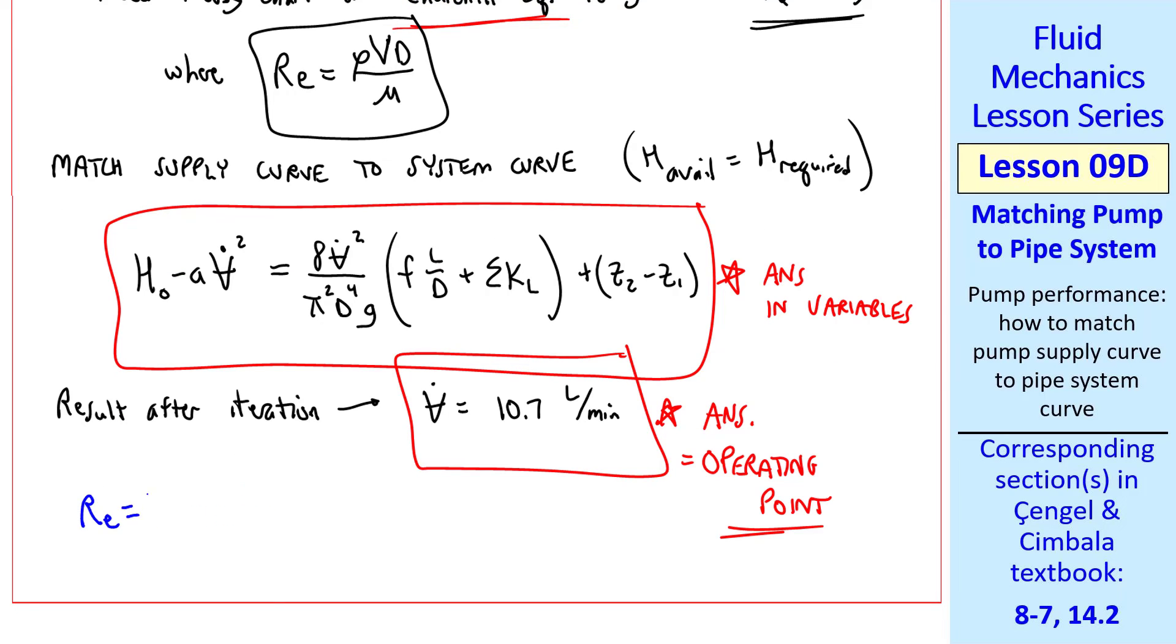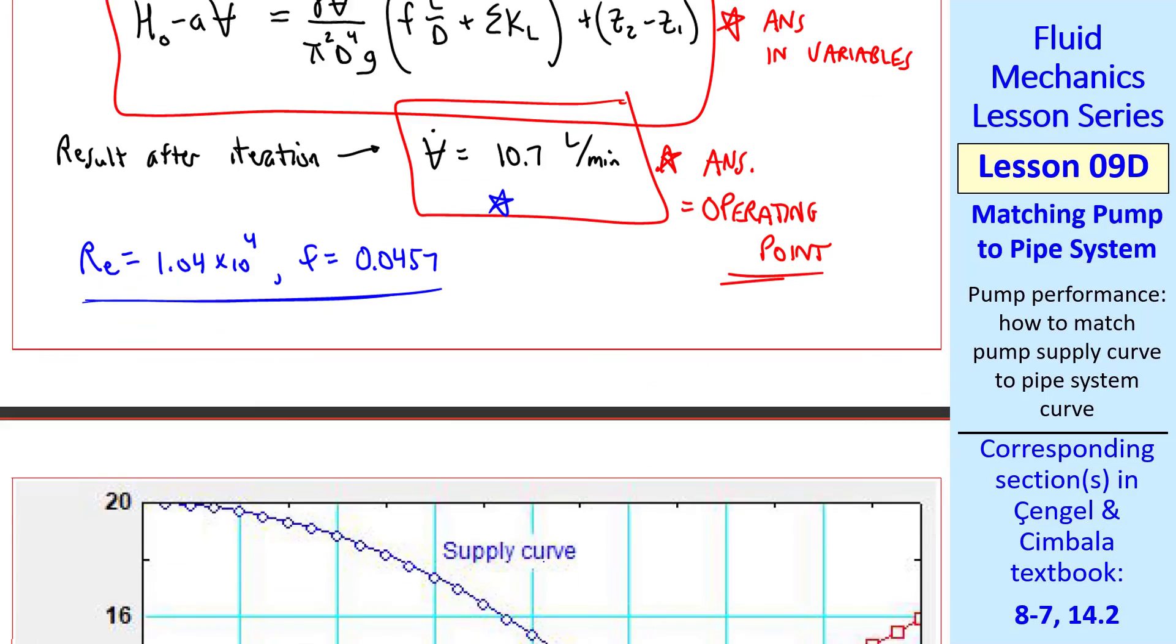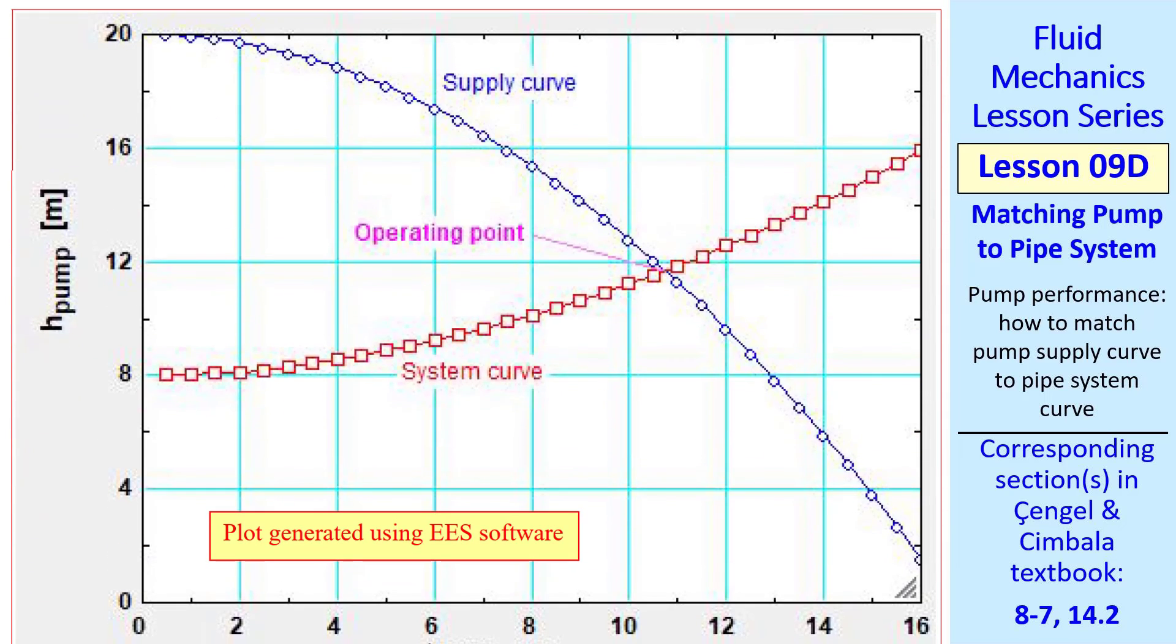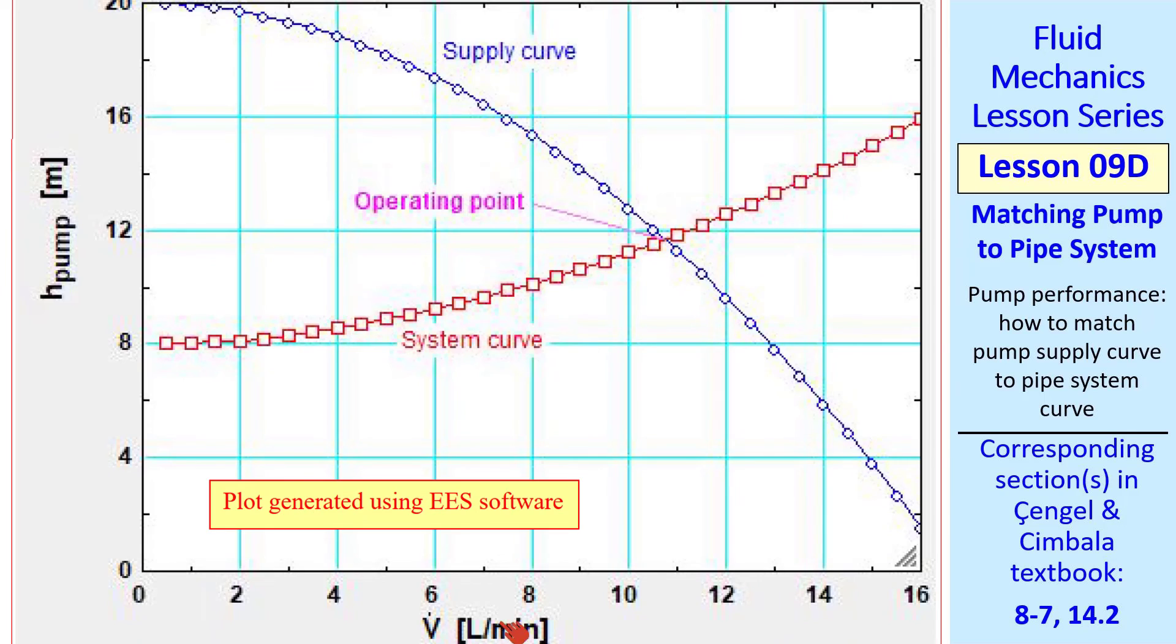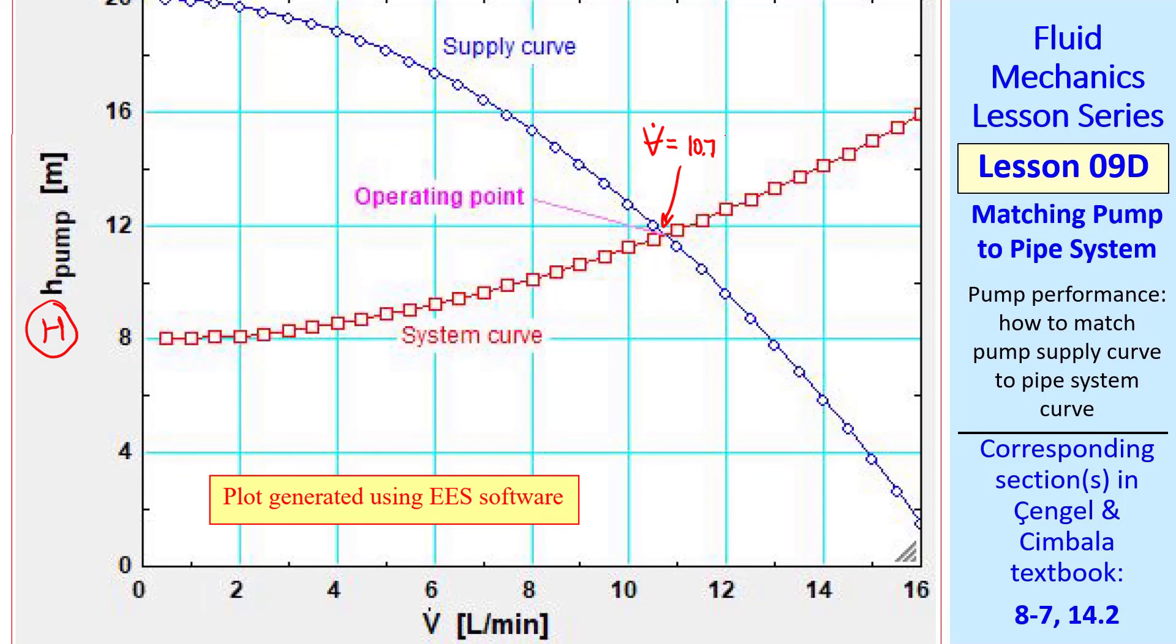I also checked the Reynolds number. It turns out to definitely be turbulent. And the Darcy friction factor is 0.0457. If you try this on your own, make sure you get these results, as well as this final answer. I also generated a plot showing the supply curve and the system curve. Here's the supply curve from the pump manufacturer. This is just our curve fit, and here's the system curve, where I picked data points at various values of V dot in liters per minute and calculated H pump, or what we call H here. You can see that the two curves meet at 10.7 liters per minute. I used EES to generate this plot. You could also use Excel, MATLAB, or any other software you want. You should get the same result.